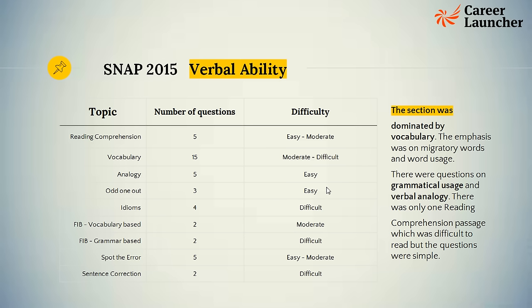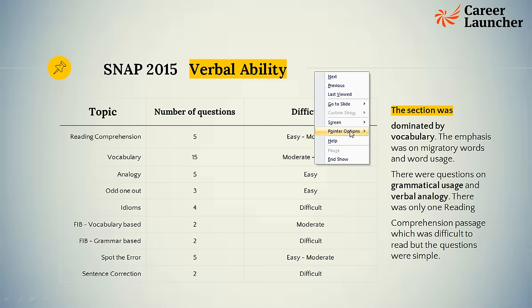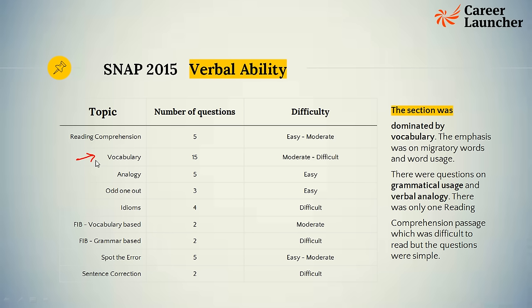This is the SNAP 2015 paper. I'm going to take you through each section in SNAP 2015, then cover what changed from 2014 to 2015, and then talk about the 2016 paper format and how to approach it. In SNAP 2016, the number of questions in verbal is the same as in 2015, which is 40 questions. In 2015, the focus in verbal was basically on vocabulary, which had about 15 questions — that's a very good proportion, about 37.5% of the section.